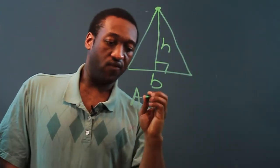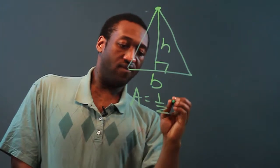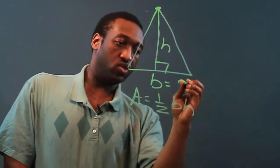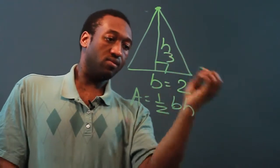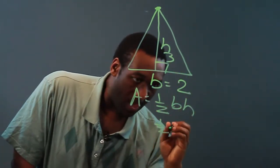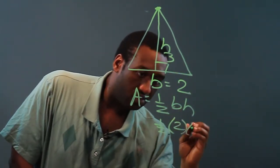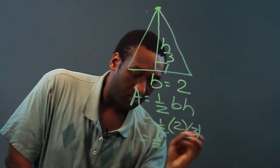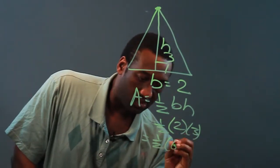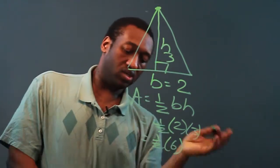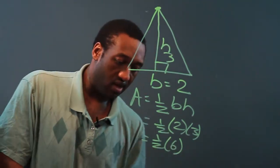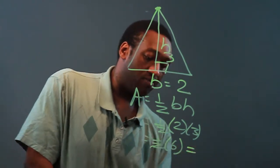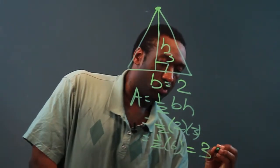The area for a triangle is one-half base times height. So let's say we had a base of two and a height of three. We'd get one-half, two times three. One-half of six — it's multiplication, so it doesn't matter which order you multiply. Multiplying by a half is the same as dividing by two, so we'll get three square units.